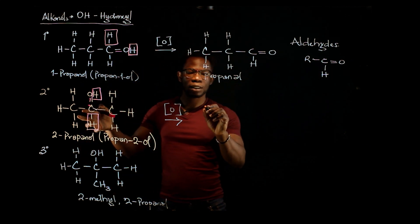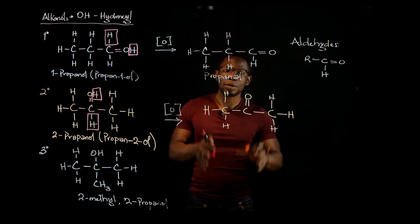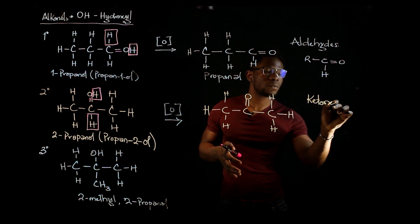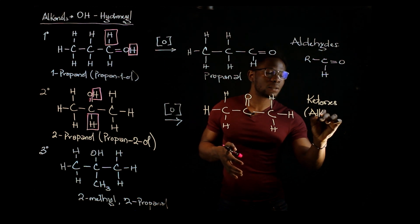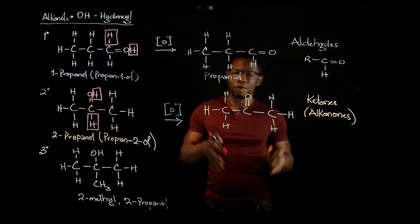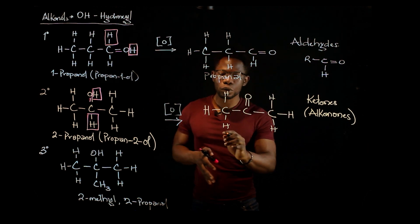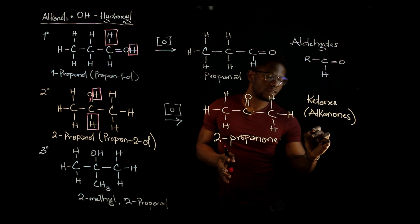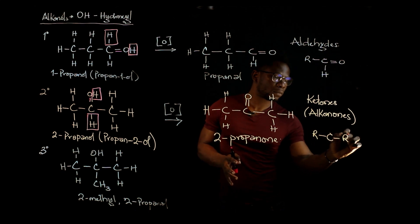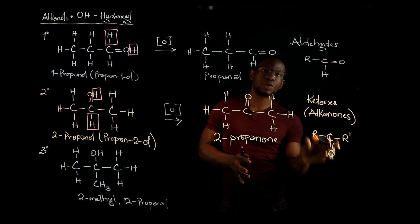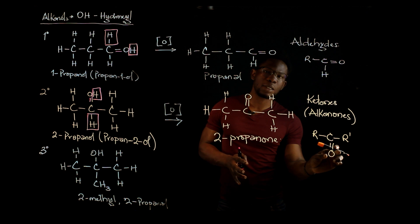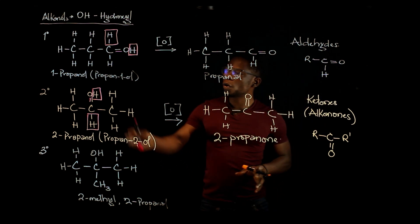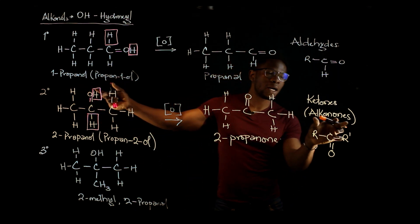The hydrogen atom lost must be the one attached to the carbon attached to the hydroxyl group. That bond is then used to form a second bond with the oxygen. This hydrocarbon belongs to another class called ketones, or alkanones. The difference is that the carbon atom attached to the carbonyl group is attached to two alkyl groups, whereas in an aldehyde it is attached to only one. So when you oxidize a secondary alcohol, you get alkanones, or ketones.